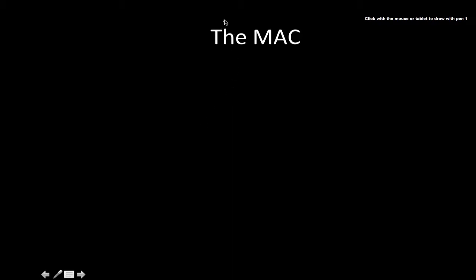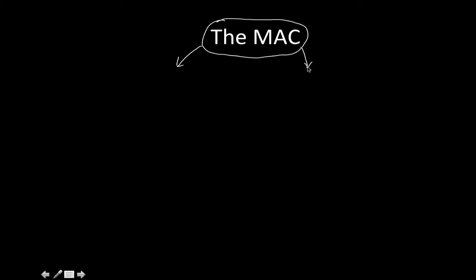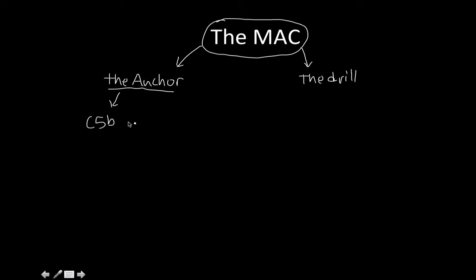The membrane attack complex has two major parts to it. I've collectively called them the anchor and the drill. The anchor consists of C5β all the way through C8. Then the drill — the part that actually drills into the membrane — is just the C9 polymer.